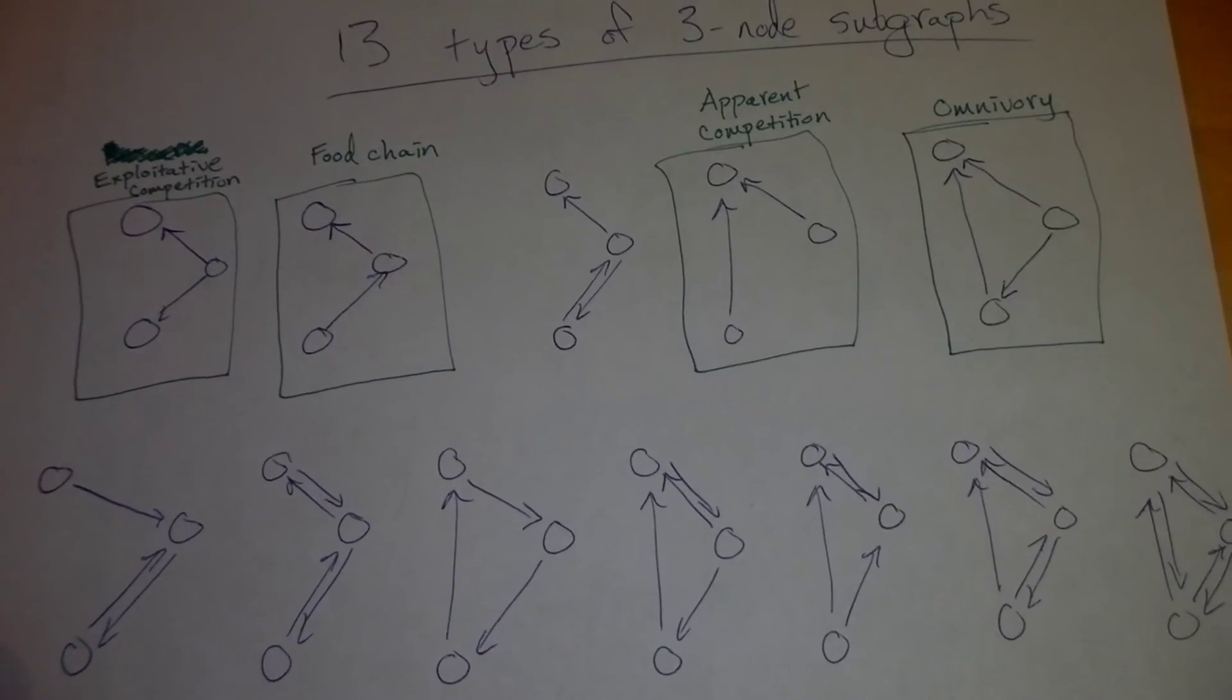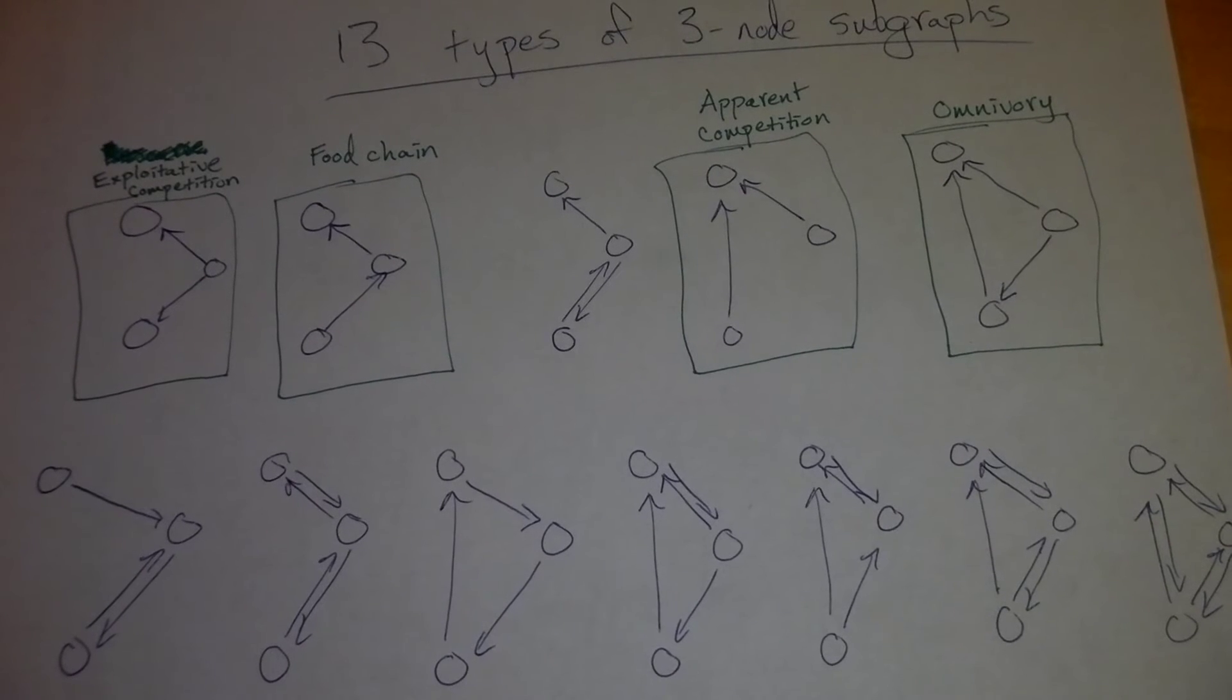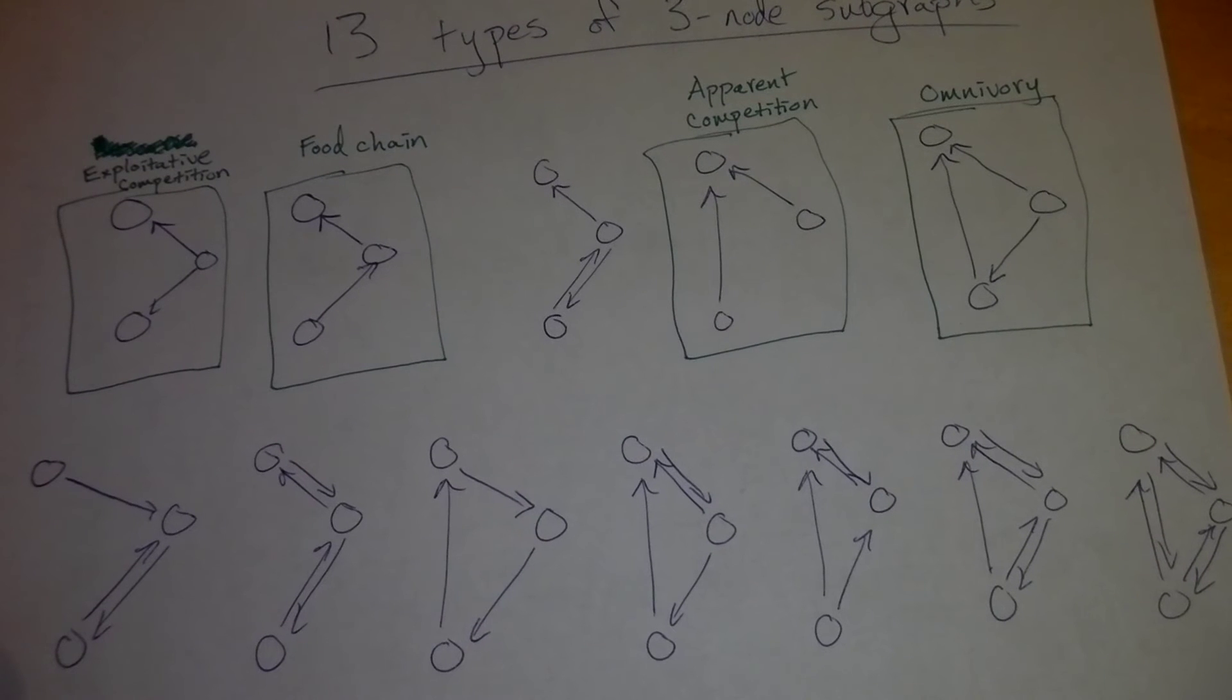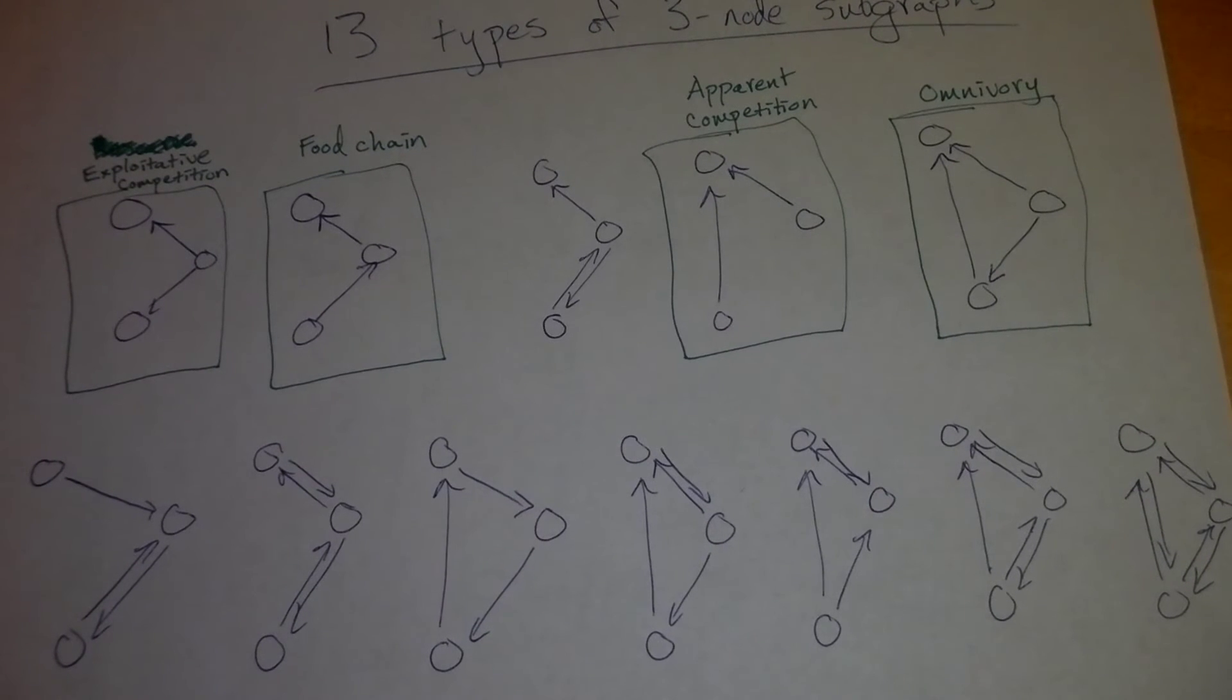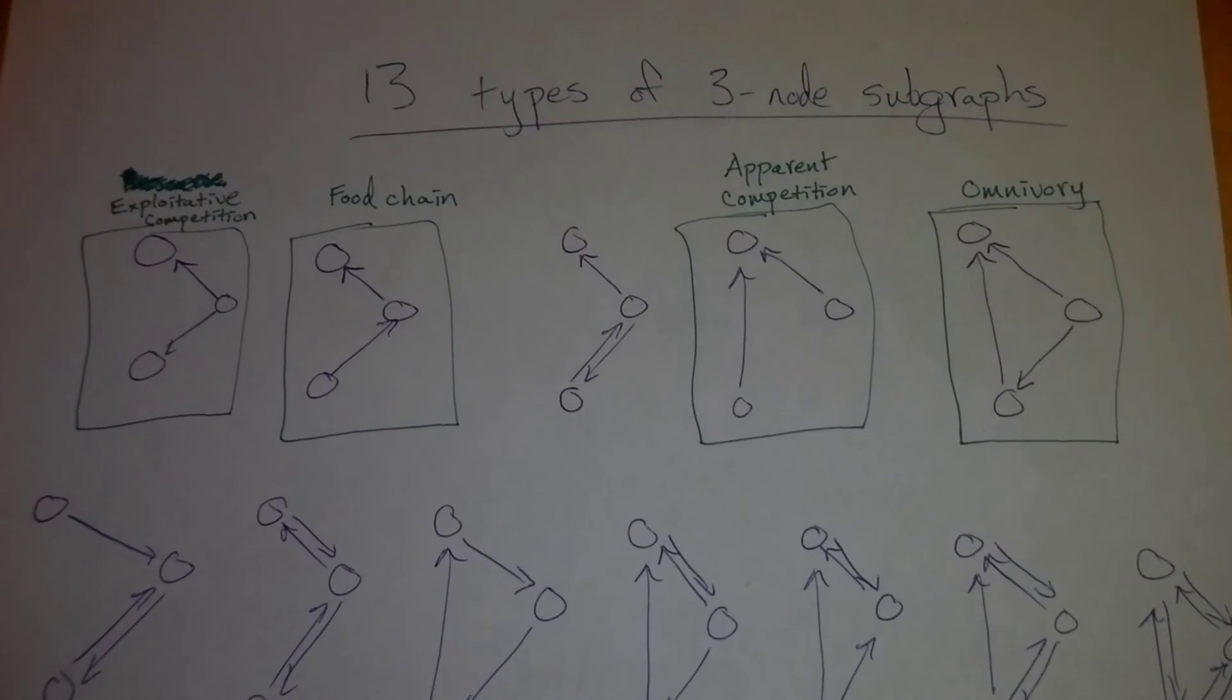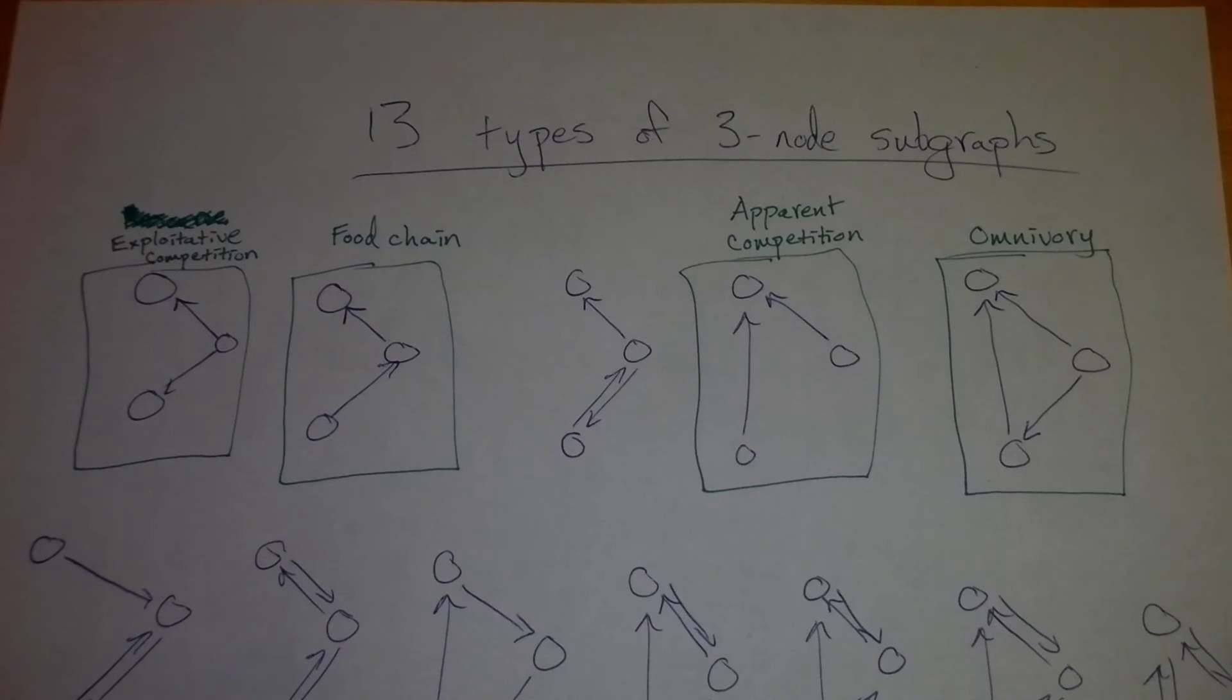And just remember, subgraph is another word. I could have just said subnetwork. Graph is the same thing as a network. But there's 13 possible combinations, patterns of interactions that could occur between three nodes. But in food webs, there's been a lot of research done, and we've actually found that there's four types of interactions that occur much more frequently than we would expect by random chance.